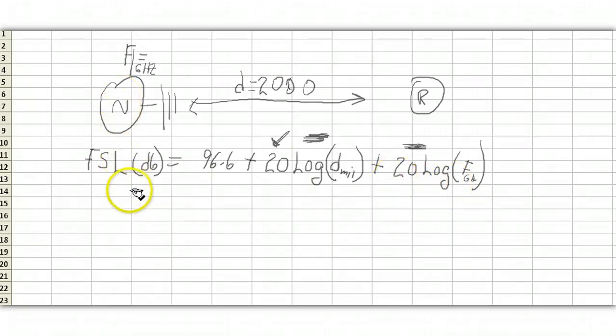Let's assume our satellite over here is transmitting on a frequency of 0.43 gigahertz. And let's also assume that the distance, d, is 2,000 miles.